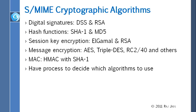Just like PGP, S-MIME has selected certain algorithms: DSS and RSA for signatures, SHA-1 and MD5 for hash functions, ElGamal and RSA for session key encryption, AES and Triple-DES for message encryption, and HMAC with SHA-1 for MAC. There is also an algorithm selection process to decide which algorithm to use.